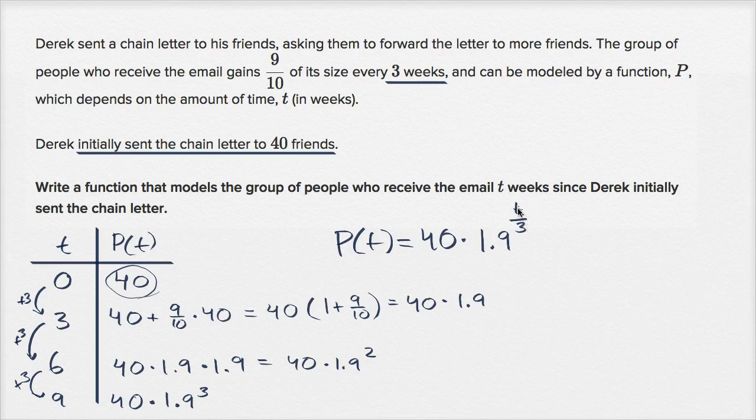And there you have it. And notice, t equals zero, 1.9 to the zeroth power is one, so 40 times one. t equals three, that's going to be 1.9 to the first power, three over three. And so we're going to grow by 90% and so on and so forth. So feeling pretty good about this.